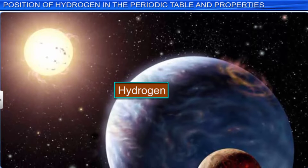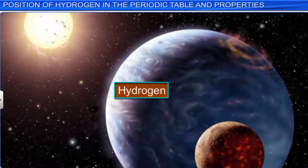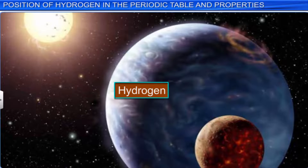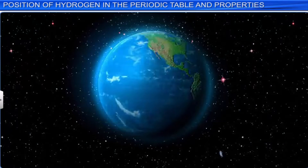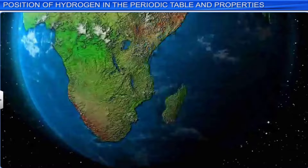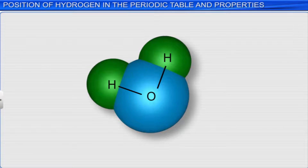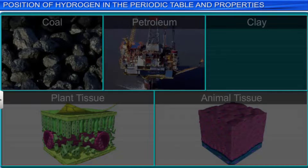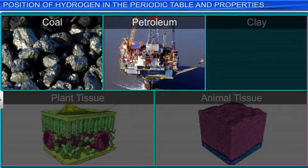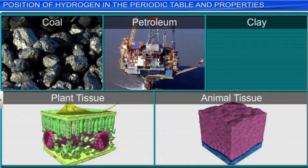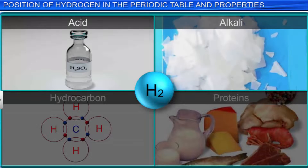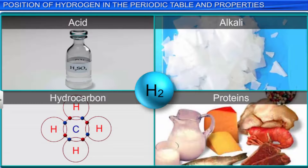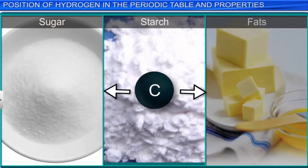Hydrogen is the most abundant element in the universe. It is found profusely not only in the atmosphere of stars but also of planets, including Earth. It is the ninth element in the order of abundance in the Earth's crust. In the combined state, hydrogen is available in water in abundance and is 11.1% by weight. It is also available in other inorganic and organic forms, like coal, petroleum, clay, and plant and animal tissues. Acids, alkalies, all hydrocarbons, and proteins also contain hydrogen in the combined state.